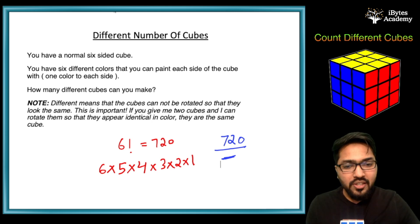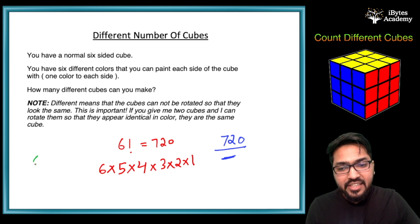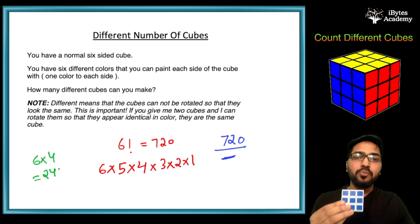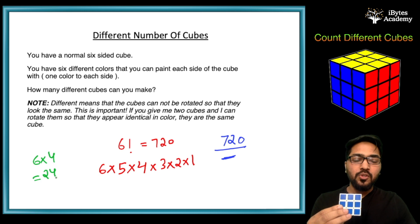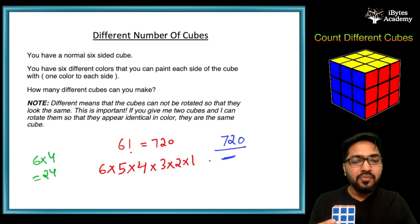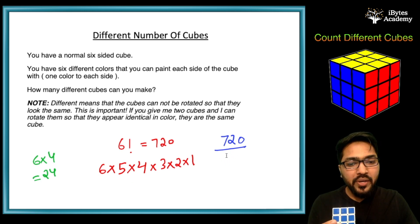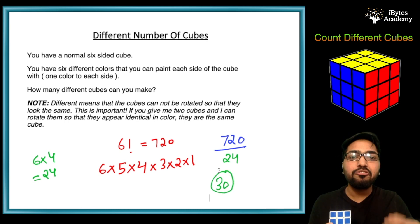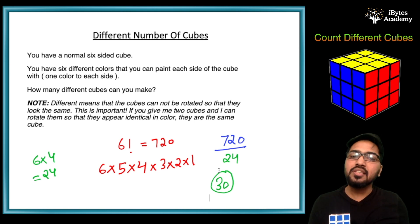We have 6 into 4 ways — that is 24 ways — to show you the same cube. So we simply divide 720 by 24, and that is 30. There are 30 different cubes that can be made out of these 6 colors.